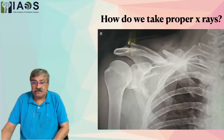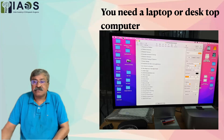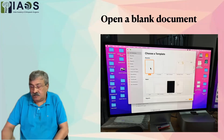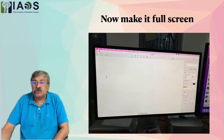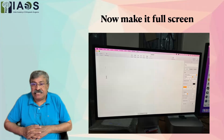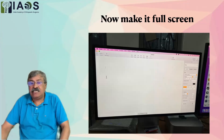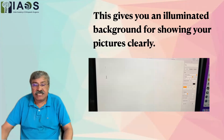How do we take proper x-rays? First, you need a proper laptop or desktop computer, which is not rare these days. We have to open a blank document and expand it to full-screen view so that the whole screen provides a bright white illumination. At this point, switch off the lights in the room so that the screen remains the only illuminated source, which will help show your pictures clearly when photographed.